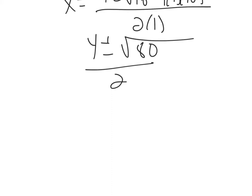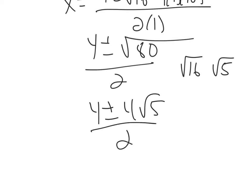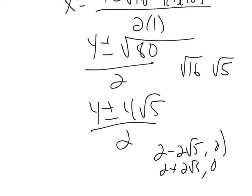The square root of 80 simplifies: 80 = 16 × 5, so √80 = 4√5. That gives 4 ± 4√5 over 2. Dividing everything by 2: the two x-intercepts are (2 − 2√5, 0) and (2 + 2√5, 0). Those correspond to the values I found in Desmos.